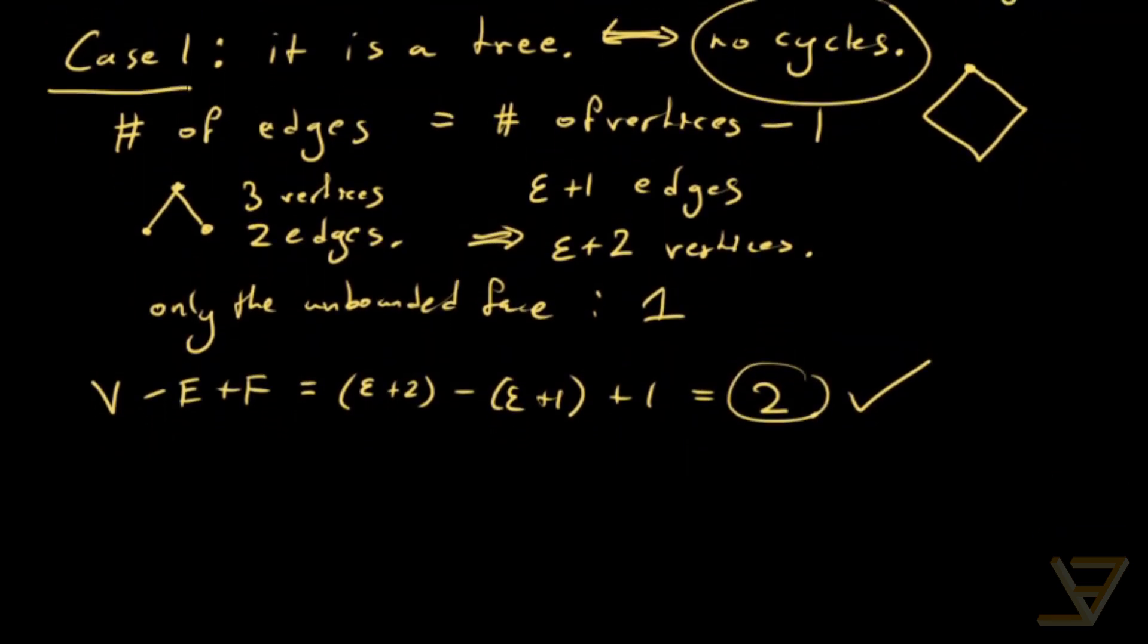That was the tree case here. So now we're going to do case two, which is there exists a cycle. Because that's literally the opposite of being a tree.